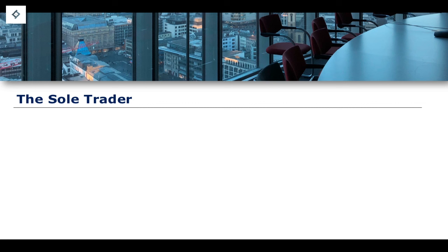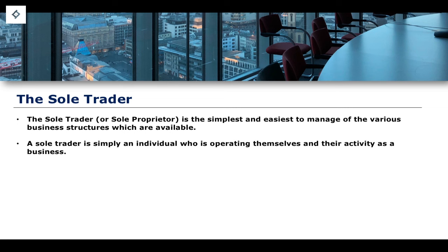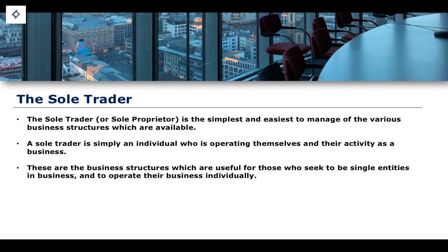The first and most simple kind of business structure is known as the sole trader, or sometimes described as the sole proprietor. This is the simplest and easiest to manage of all the various business structures available. The sole trader is simply an individual who wants to operate a business and is operating that business as themselves - their activity is their business activity. They are the business. When that individual retires or dies, the business dies or retires with that person. The sole trader is popular because of the simplicity and ease with which you can manage the business structure.